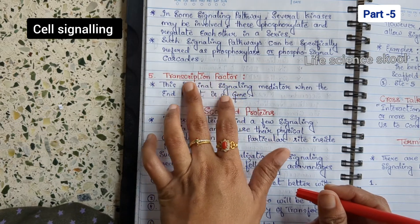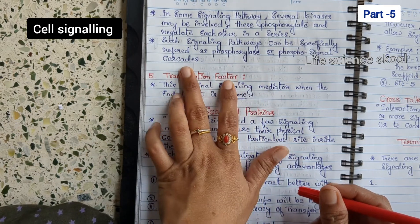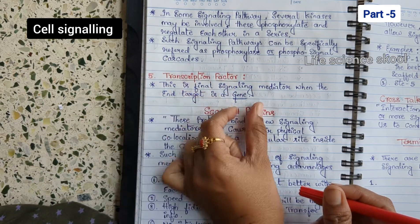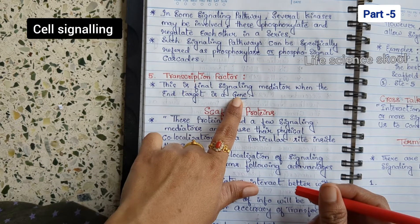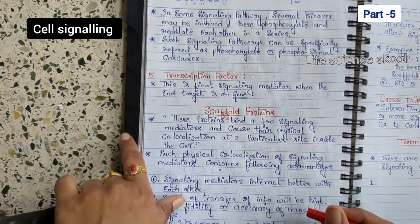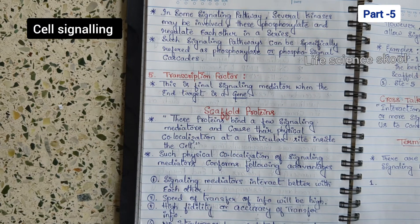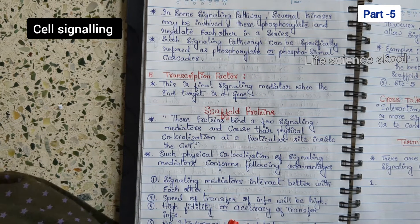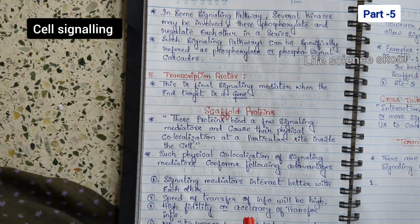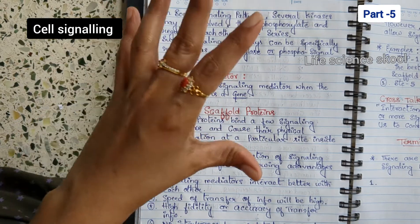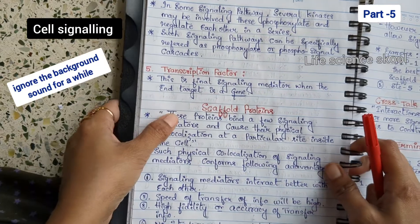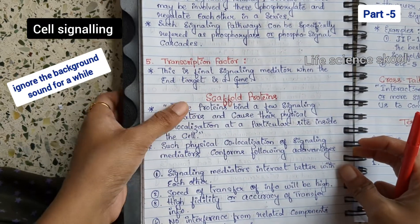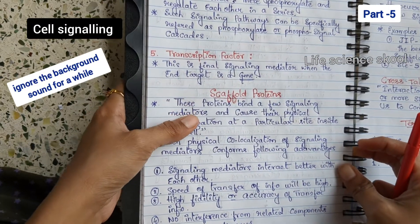The final signaling mediator is the transcription factor. This is the final signaling mediator when the end target is a gene. So when the end target is a gene, the transcription factor acts as the signaling mediator.